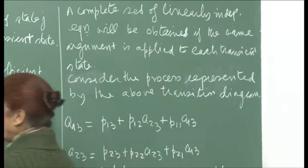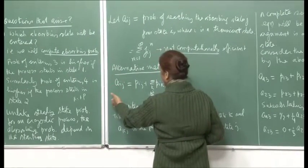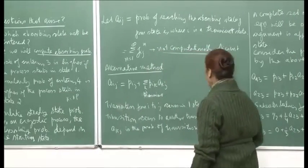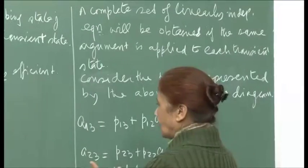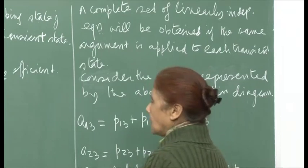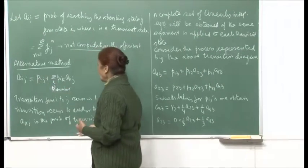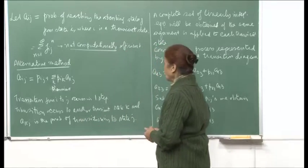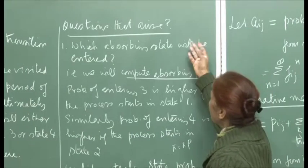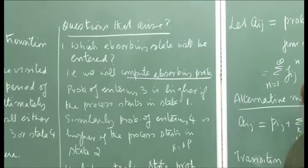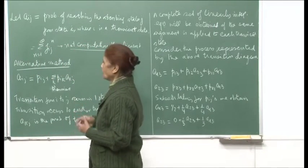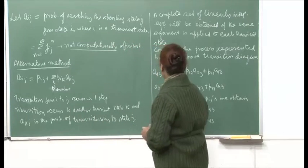Or you transition from i to another transient state k with probability p_ik, and then A_kj will be the probability of ultimately transitioning from transient state k to absorbing state j. A complete set of linearly independent equations will be obtained if the same argument is applied to each transient state. Whatever the number of transient states, from each of them I will find the probability of transitioning to the absorbing state j, giving a complete set of linearly independent equations. We then solve for the A_ij's and can answer which absorbing state will be entered with what probability, starting from each state.